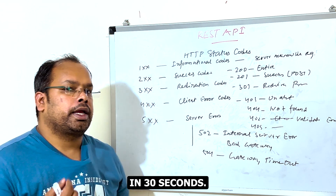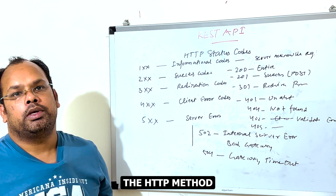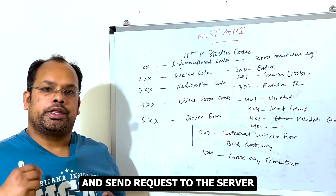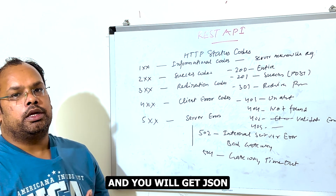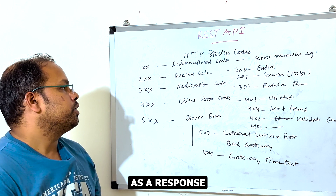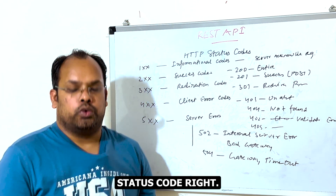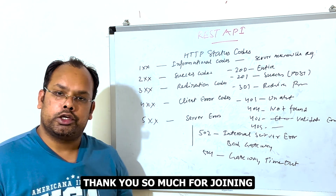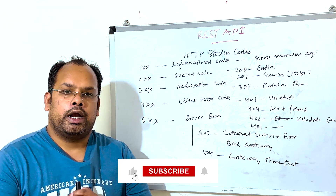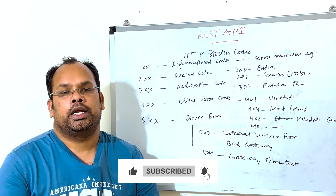That's all for REST APIs. To quickly conclude: REST follows HTTP methods to send requests to the server, and you get JSON as a response along with the appropriate HTTP status code. Thank you so much for joining — please like, comment, and share. Happy learning!